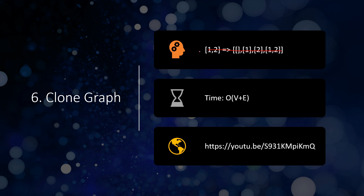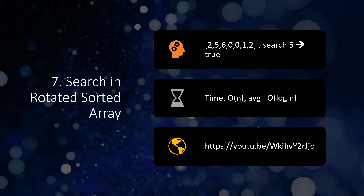The sixth problem is cloning a graph. You are given a graph and you have to make a deep copy of it. The graph has different nodes that are connected, and you have to create a new graph where all nodes, edges, and connections are copied in exactly the same order — so traversing the new graph gives the same result. The time complexity should be O(V + E), where V is the number of vertices and E is the number of edges.